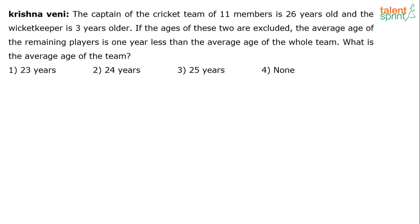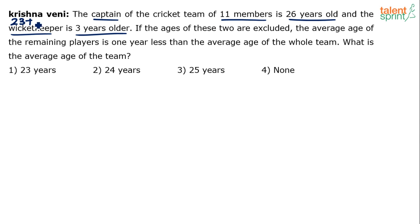So, interesting question. There is a cricket team of 11 members. The captain of this team is 26 years old and the wicketkeeper is 3 years older. The wicketkeeper's age is 26 plus 3, which is 29 years. So, the captain is 26 years old and the wicketkeeper is 29 years old.